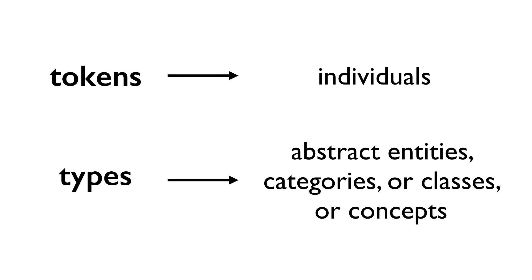The type-token distinction is also, in some sense, a metaphysical distinction. Tokens can be concrete individuals — like this nickel in my pocket or this car I'm driving. Types are different. If we choose to think of them as entities, they're abstract entities. The nickel is in my pocket, but where is the type 'US 5-cent coin' located? If we think of types as categories, classes, or concepts, there's still an issue about what exactly such things are, but these issues don't prevent us from using the distinction.